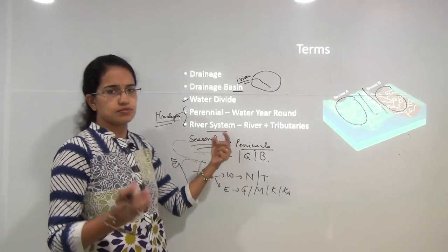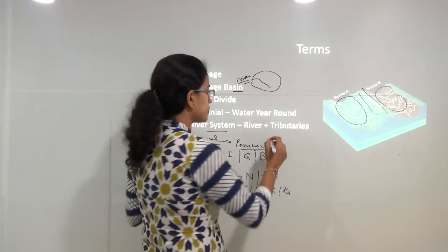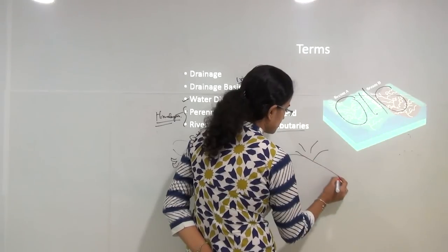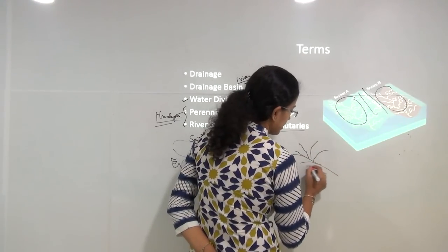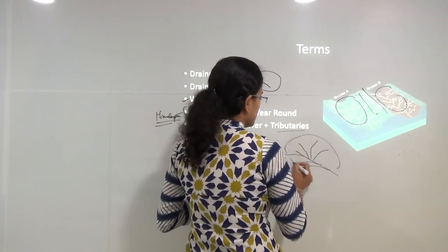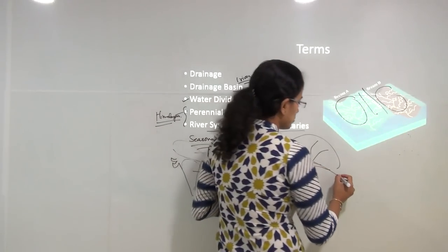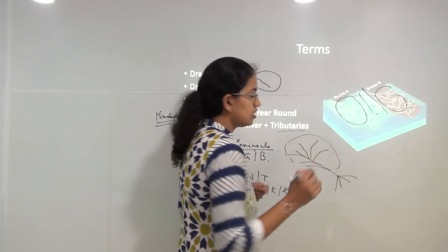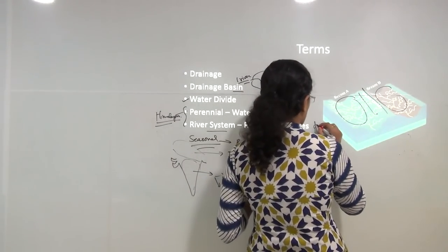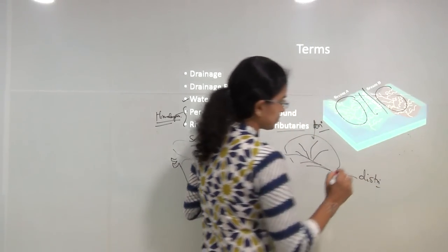A river system includes the river as well as its tributaries. Tributaries are the small rivers that join up to the major river and together form one bigger system. Finally, when the river meets the ocean, it bifurcates again into small channels known as distributaries. So when it joins the main river it is a tributary, and when it bifurcates it is a distributary.